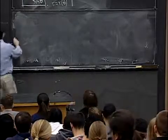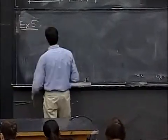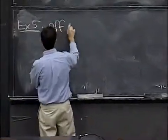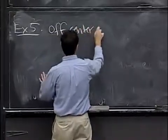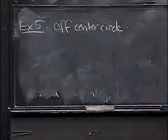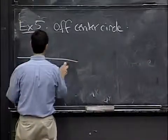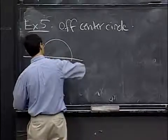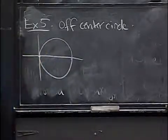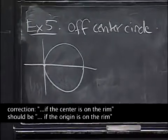This is a standard example and it comes up a lot. This is an off-center circle. A circle is really easy to describe, but not necessarily if the center is on the rim of the circle. That's a different problem.